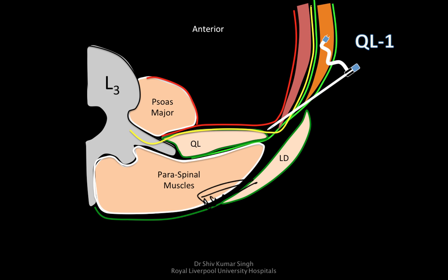Now if we look at the Quadratus lumborum block which was first described — it came through the external oblique, internal oblique, and then pierced the transverse abdominis aponeurosis to block the nerve. That's where the controversy lies, because this is nothing but the transversalis fascia block which was described by Peter Hubbard. Interestingly, I have used a peripheral nerve stimulator and you can stimulate the nerve just under the transverse abdominis aponeurosis — you can see the twitching of the abdominal muscles. So that can be done with ultrasound and with nerve stimulation.